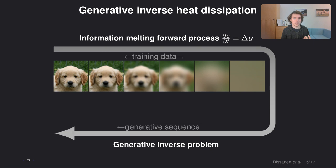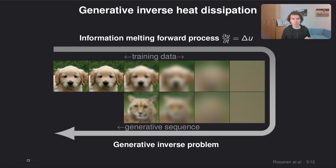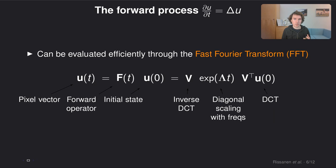So the reverse generative process then explicitly and in a very visually obvious way focuses only on certain resolutions at each step of generation. And it turns out that the heat equation for our process is actually very easy to evaluate efficiently using the fast Fourier transform.